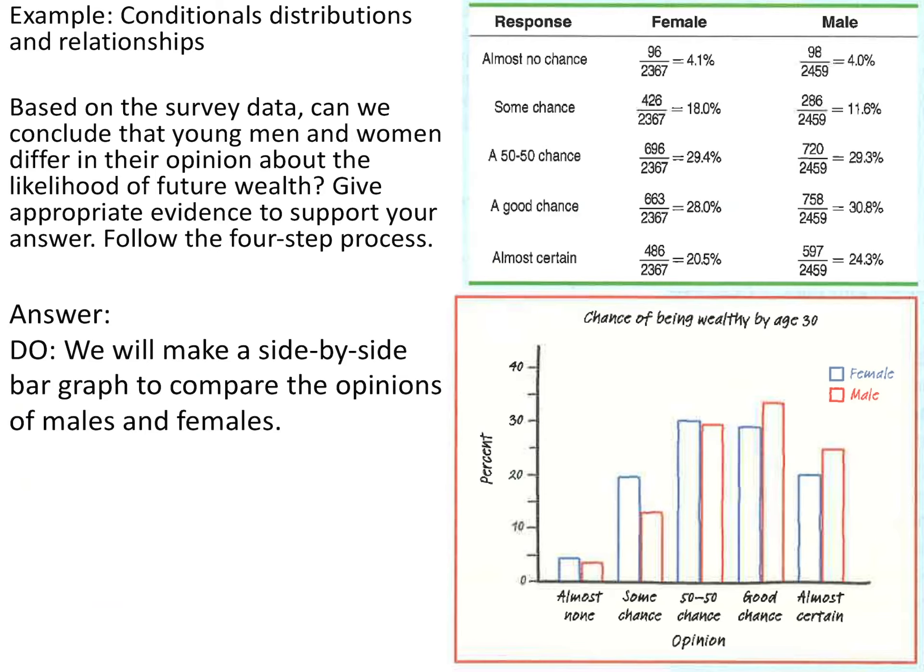Among females, we looked at what percent said almost no chance. Of just the females, there were 2,367 females surveyed. 4.1% thought they would have almost no chance, while 4% of the men surveyed thought they would have almost no chance. For some chance, 18% of the females said that, compared to only 11.6% of the males.